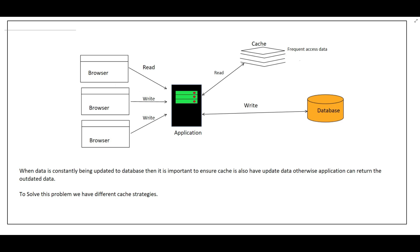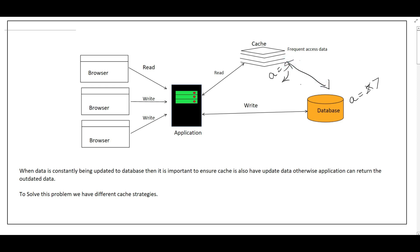Whenever write requests come, we write to the database. It is very important that the data should be in sync — whatever data is present in the cache and whatever data is present in the DB should be in sync. Suppose in the database a equals 5, then the cache should also have a equals 5. If a is updated to 7, the same data should be updated in the cache, otherwise we will serve stale or older data. So we need a solution to sync data between the DB and the cache.